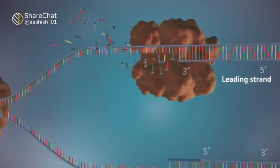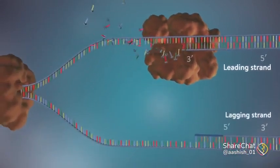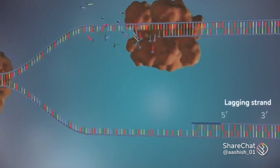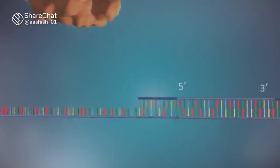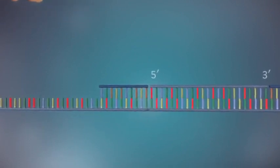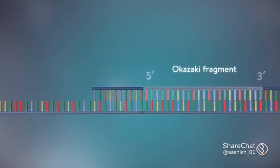The other strand, the lagging strand, cannot be made in this continuous way because it runs in the opposite direction. The DNA polymerase can therefore only make this strand in a series of small chunks called Okazaki fragments.